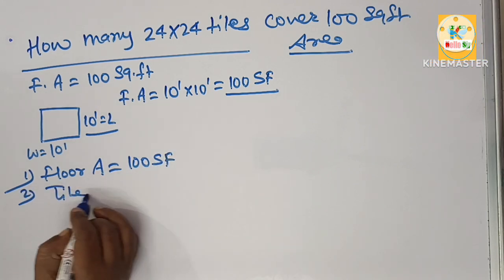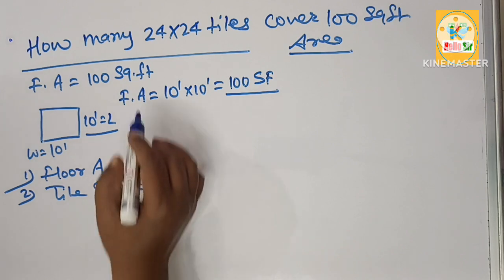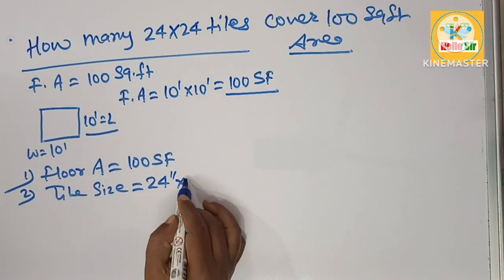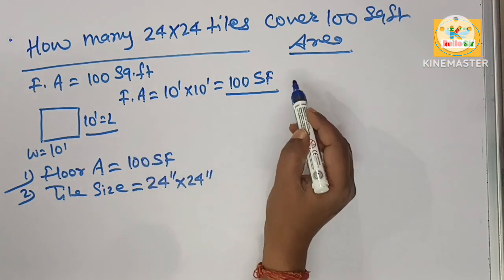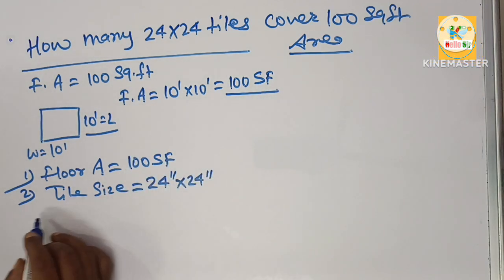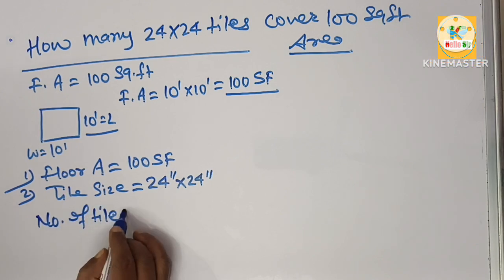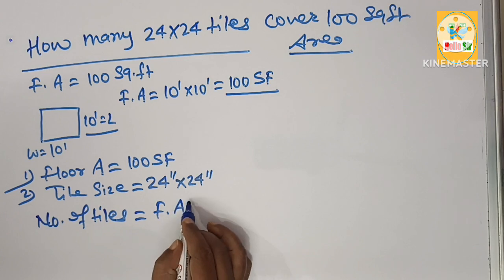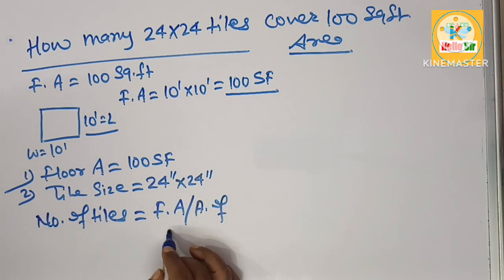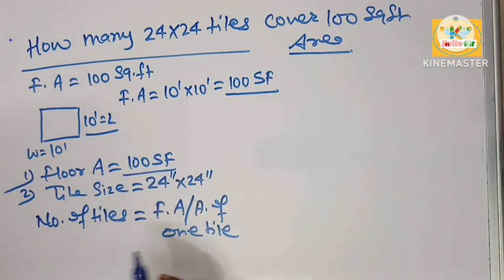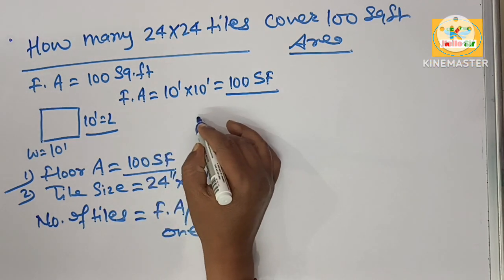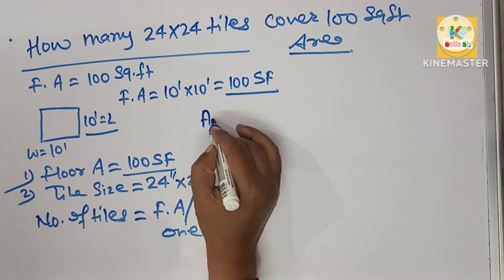What is the formula to calculate number of tiles required to cover 100 square foot area? Here is the formula: number of tiles is equal to floor area divided by area of one tile. Here you have given the floor area is 100 square foot and you have to find out area of one tile.